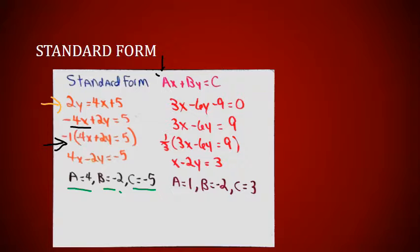Let's take a look at the second equation: 3X minus 6Y minus 9 equals 0. First I've got to move that minus 9 across the equal sign to begin getting this into AX plus BY equals C form. So I've got 3X minus 6Y equals 9. I could think I'm almost done, but the greatest common factor of 3, 6, and 9 is not 1 — it's 3.